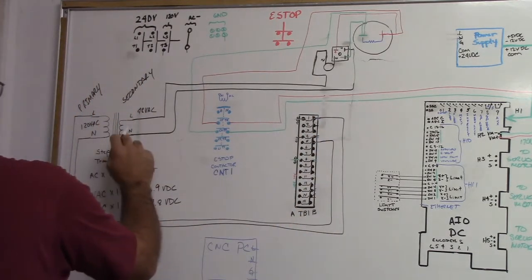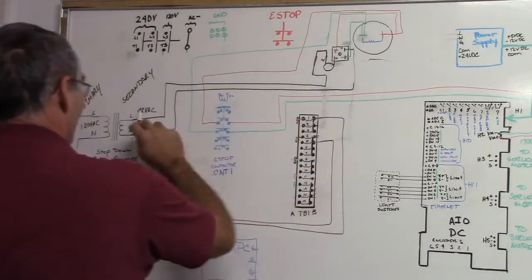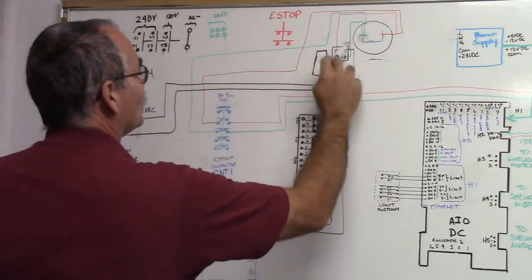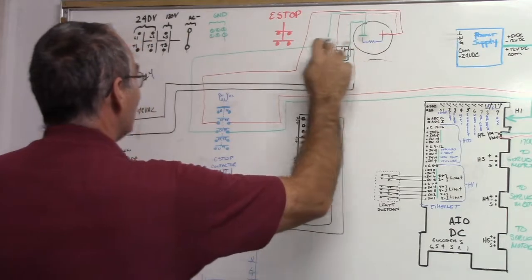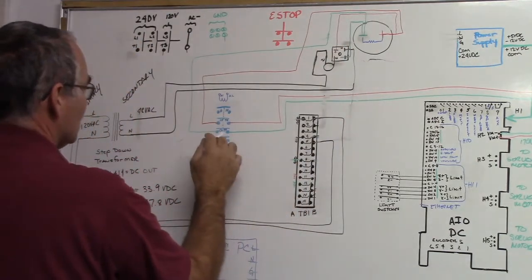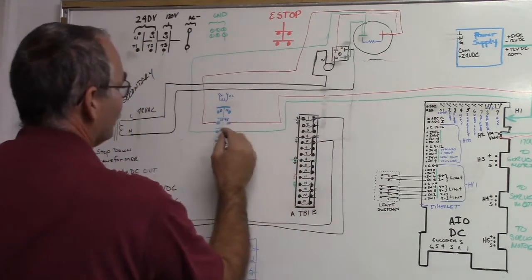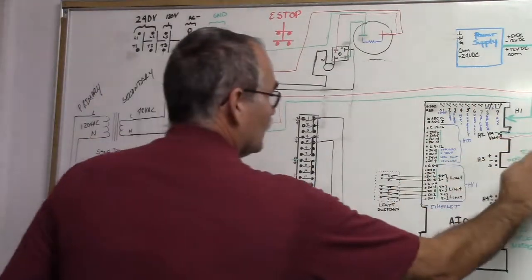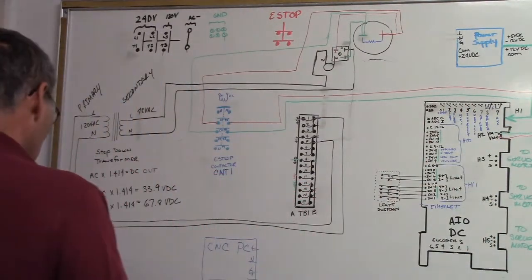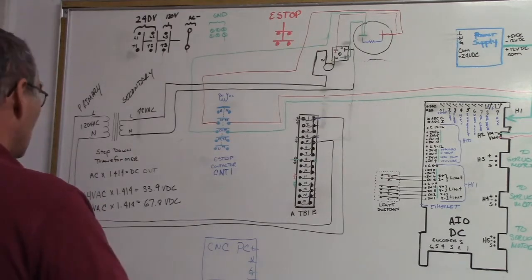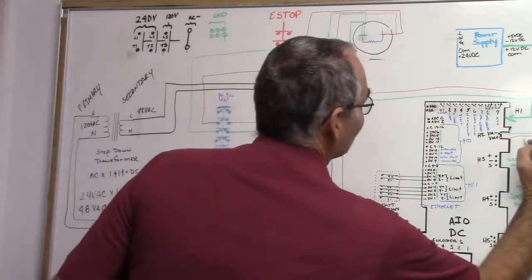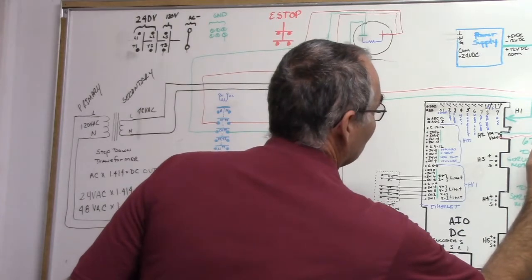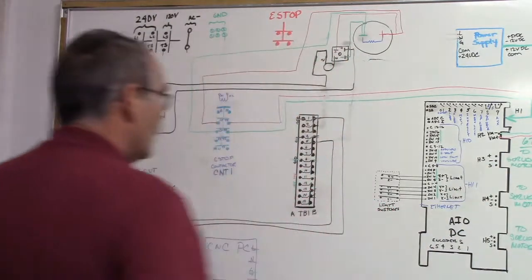Now we got voltage out, 48 volts AC out, goes through our bridge, goes through our cap, and then it comes over to our CNT1 contactor, L3 and L4. And now what do we have over here? We don't have 170 volts over there. What do we have over there? We've got 67.8 VDC.